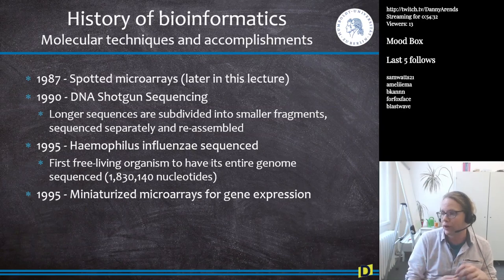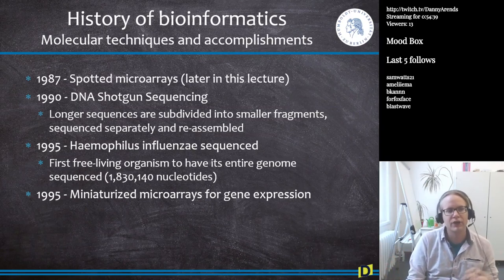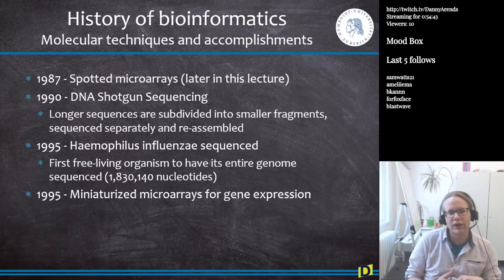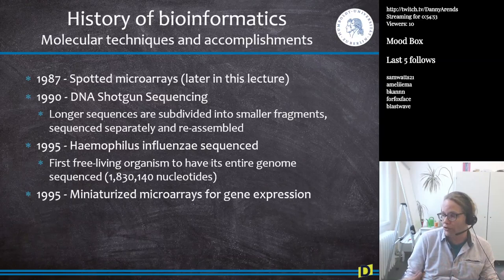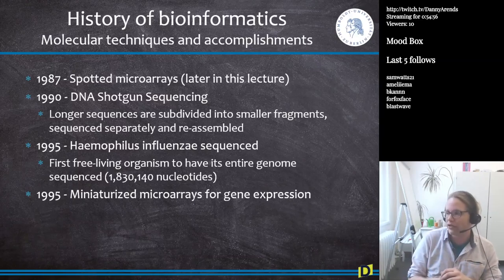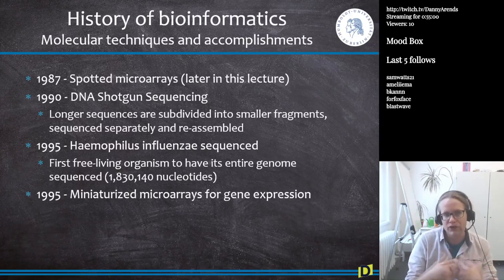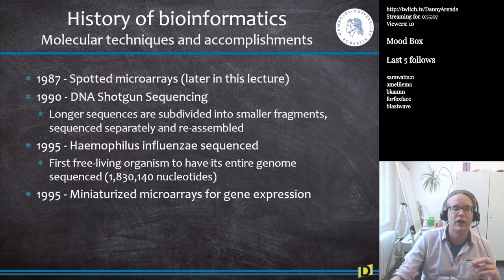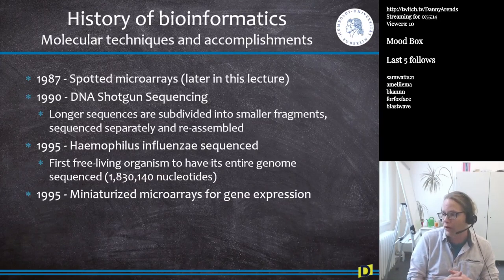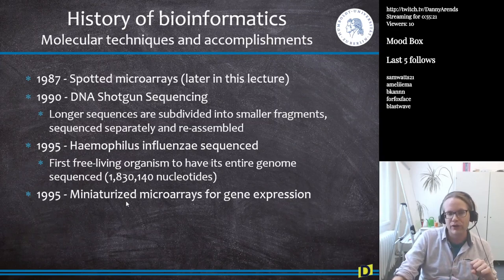In 1995, Influenza was sequenced — the first free-living organism to have its entire genome sequenced, at around 1.8 million nucleotides. Also in 1995, microarrays were miniaturized onto single glass plates, allowing measurement of not just a few genes but all genes in a genome simultaneously. This miniaturization pushed the quantities of data obtainable in biology to new heights, requiring computers to adjust accordingly.